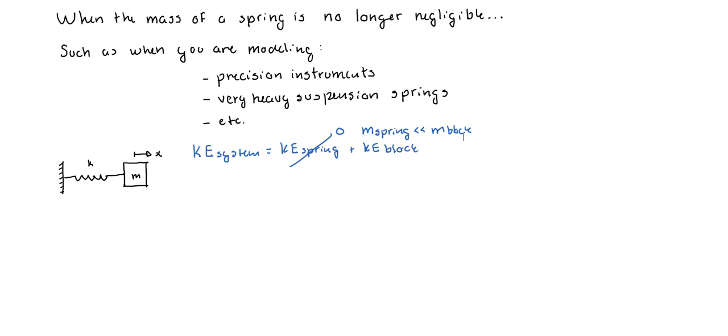If you're modeling precision instruments where the mass of the entire system is very, very small and you have a few springs in there, the masses of the springs aren't going to be negligible. If a phenomenon such as vibrations is happening and you need to study it, then you can't simply assume that the spring is massless. In other cases, it's just that the springs are very, very heavy, such as in the suspension of some trucks or heavy machinery.